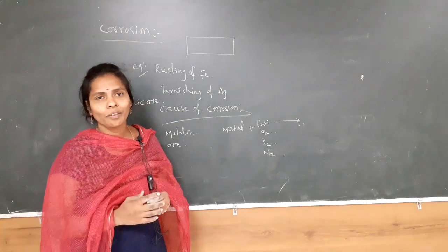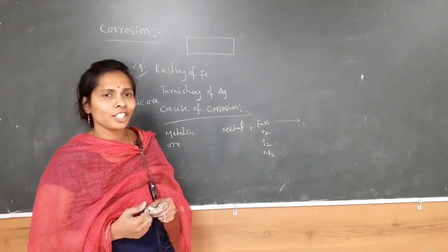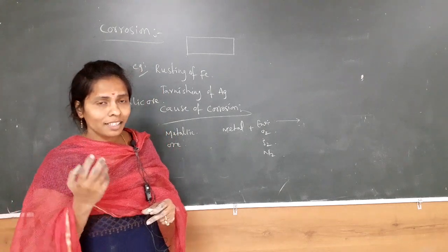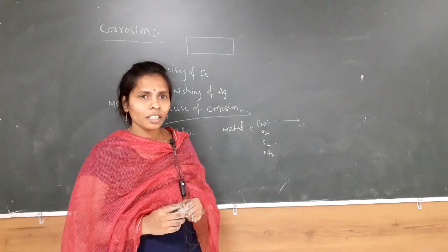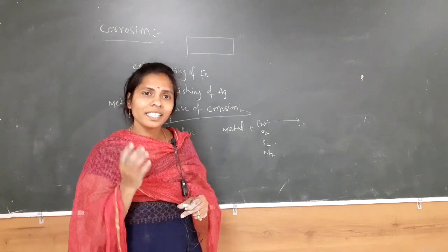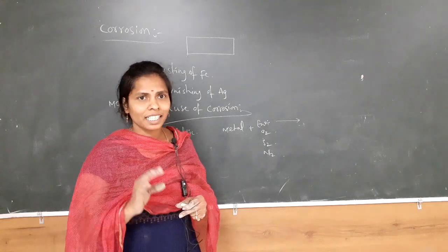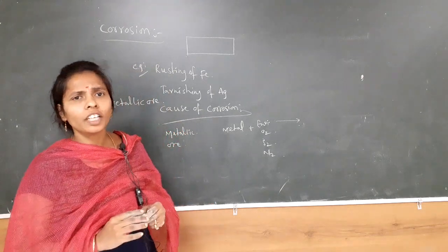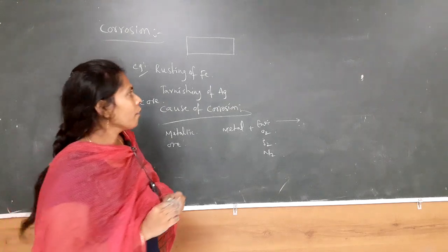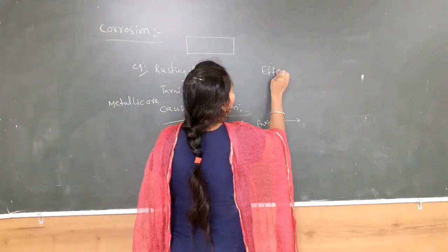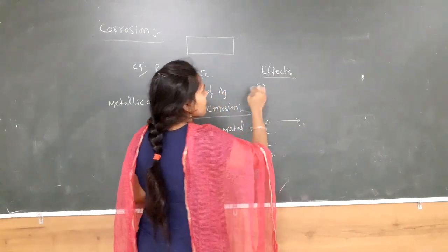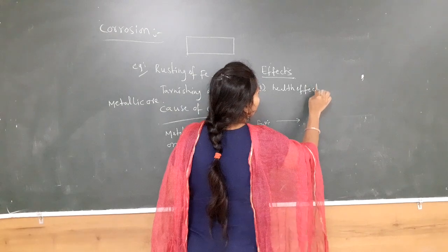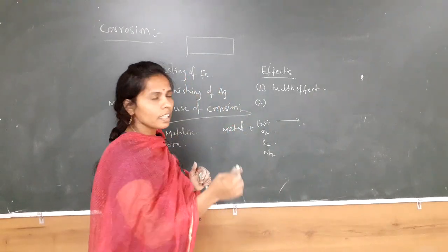Now let us see the effects of corrosion. When the metal starts rust formation or undergoes corrosion, it loses its strength and characteristics. There are two types of effects of corrosion: the first is health effects, and the second is economical effects.